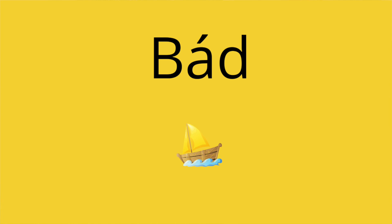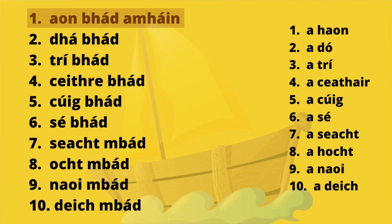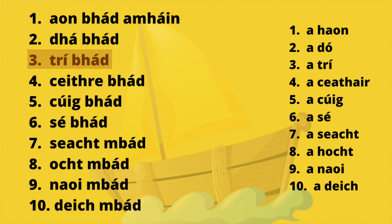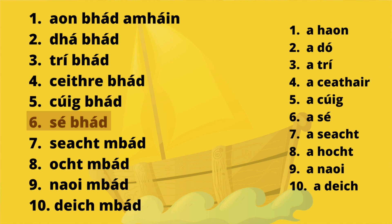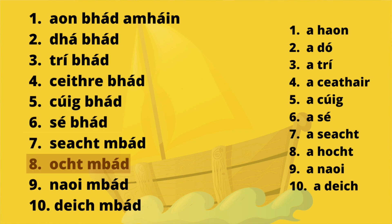It's going to be very similar when you count nouns but you're going to notice some differences. Let's look at this word here first of all — bád, that's the Irish word for boat. Now if we're going to be counting bád, here's how it's going to look: aon bhád, dhá bhád, trí bhád, ceathair bhád, cúig bhád, sé bhád, seacht mbád, ocht mbád, naoi mbád, deich mbád.